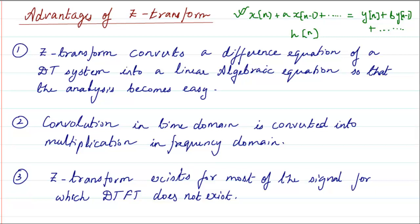Second advantage: convolution in the time domain is very easily converted to multiplication in the frequency domain. The Z domain is again e^(jω), so it is called the frequency domain. Third advantage: the Z transform exists for most signals for which the DTFT analysis cannot be done. There are many signals for which the DTFT does not exist, and for such cases the Z transform will exist — that is why we study the Z transform.